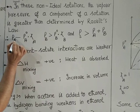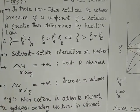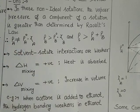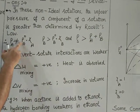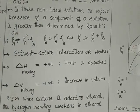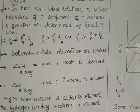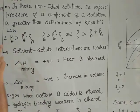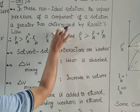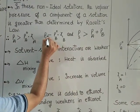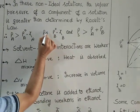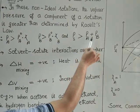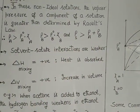If Raoult's law were obeyed, as we studied in the last lecture, there would be an equality sign. But because these are non-ideal solutions, Raoult's law is not obeyed. So P-A will not be equal to P-naught-A into X-A. In these non-ideal solutions showing positive deviations, the vapor pressure of the solvent will be greater than P-naught-A into X-A. The vapor pressure of each component will be higher than predicted by Raoult's law.